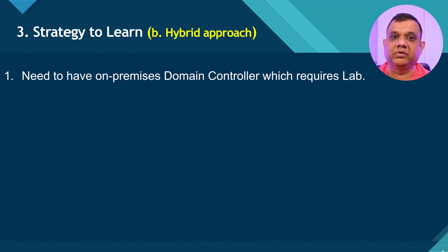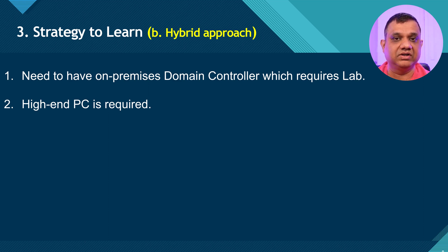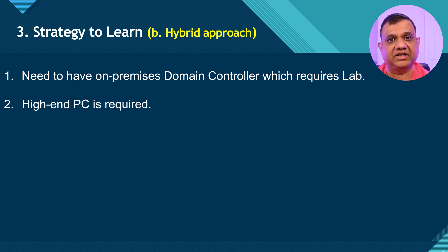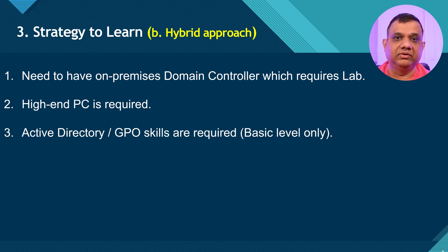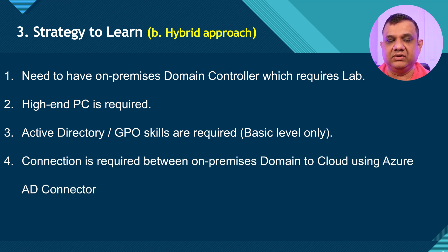For the hybrid approach, you need a high-end PC — a minimum 6-core processor, 16 GB minimum RAM with 32 GB recommended, and at least 500 GB SSD storage. If you have questions about lab creation, post in the comments or at manishbangay.com/forums. Once your server is ready, configure Active Directory and group policy. Connect your on-premises infrastructure to the cloud using Azure AD Connect, creating a bridge where both technologies are combined — that is why it is called hybrid.